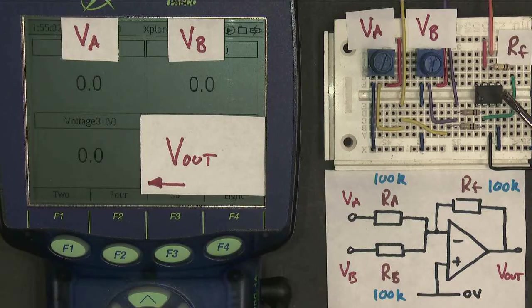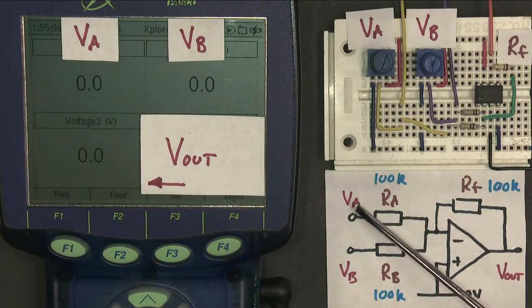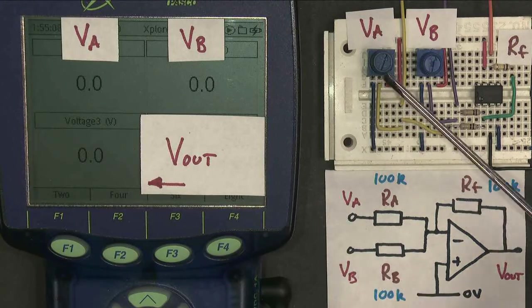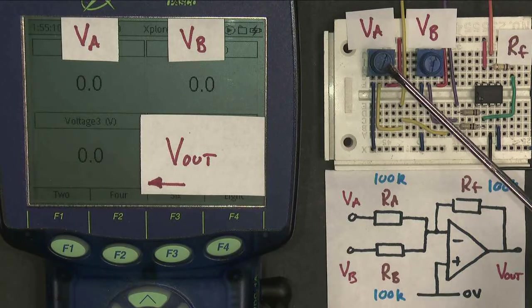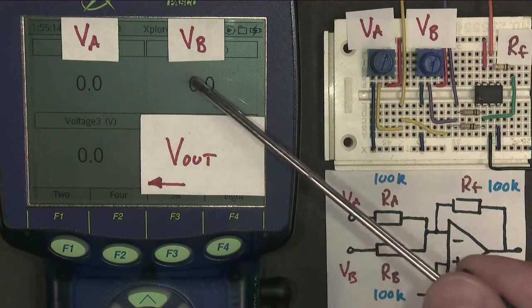This video is about the summing amplifier. Here is my summing amplifier circuit. It has two inputs, VA and VB, which I'm going to control with these potentiometers. This one for VA, this one for VB, and the voltage is shown on my voltmeter here.